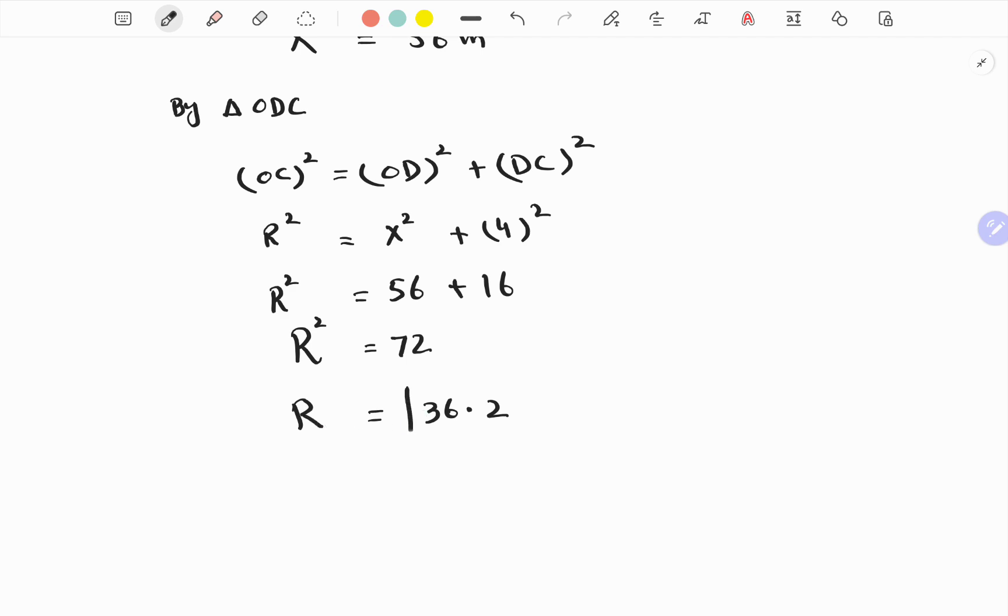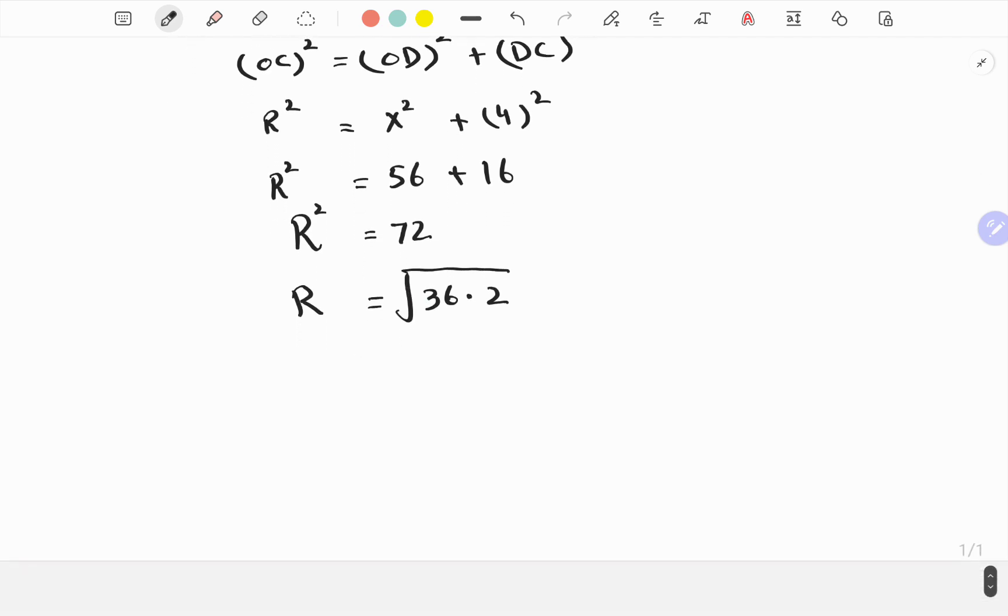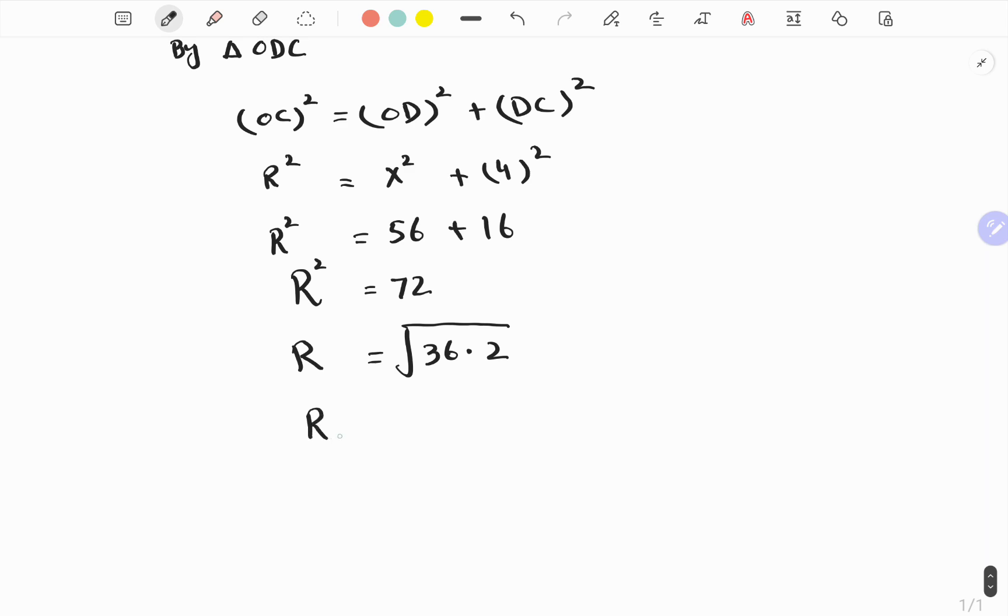And if we take R, it will be square root of this one. From here, R is equal to 6 times square root of 2 meters. That is the answer. Thank you for watching.